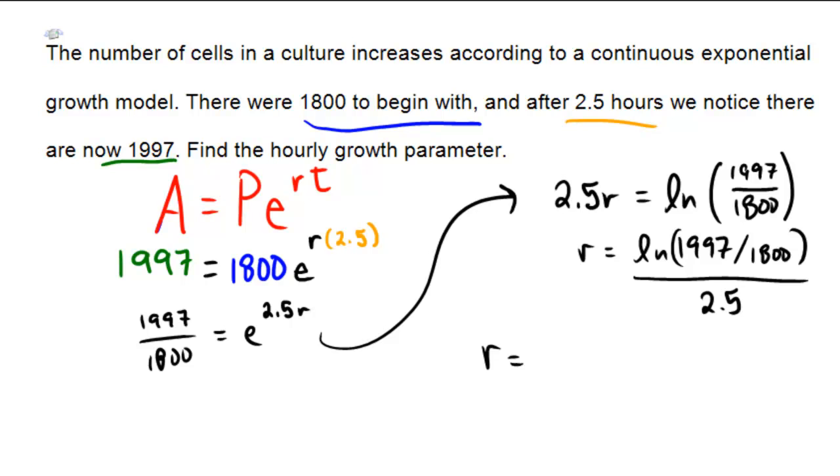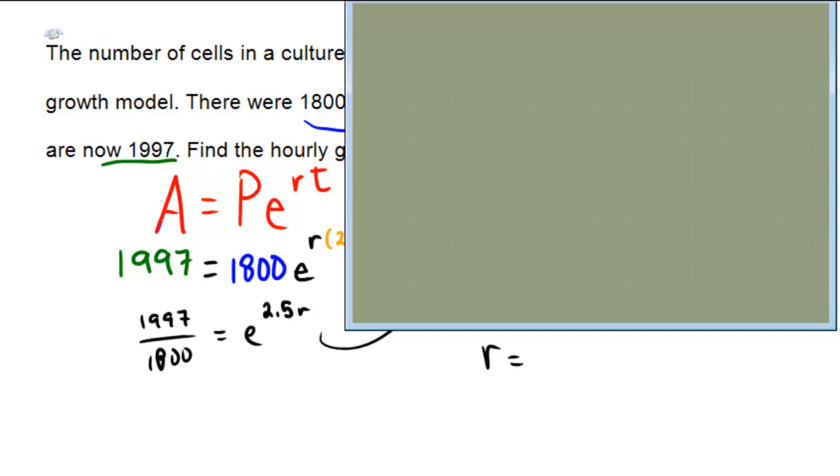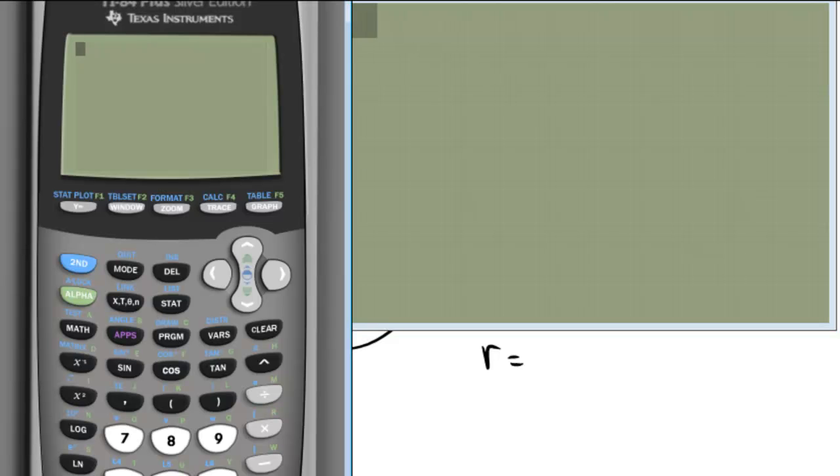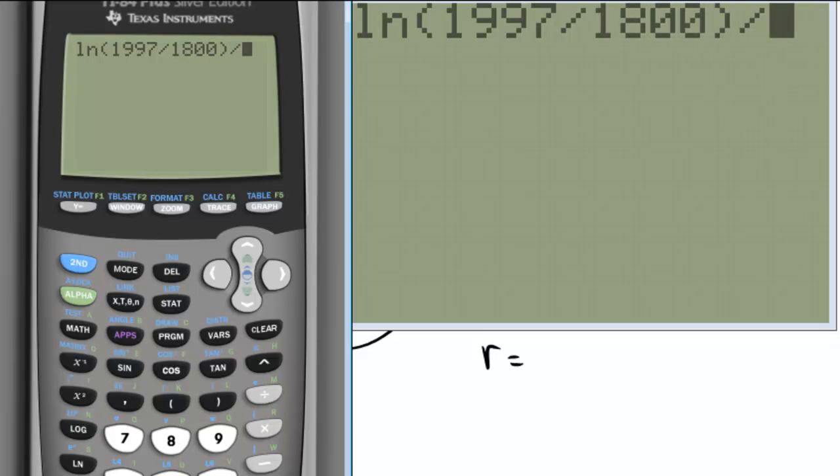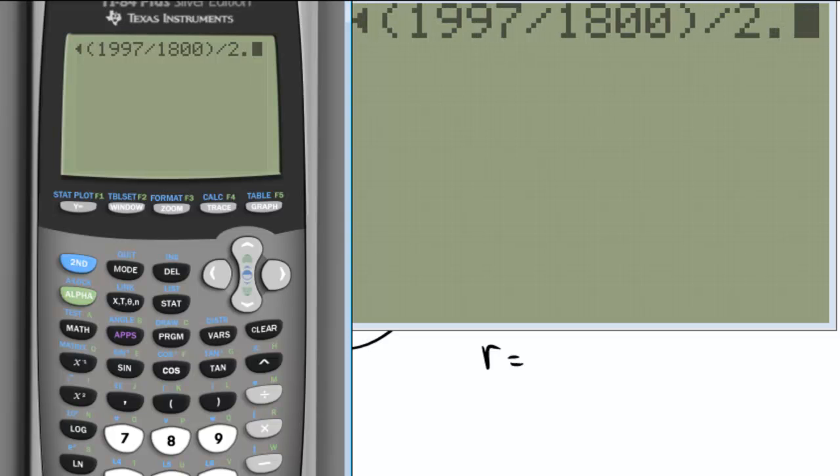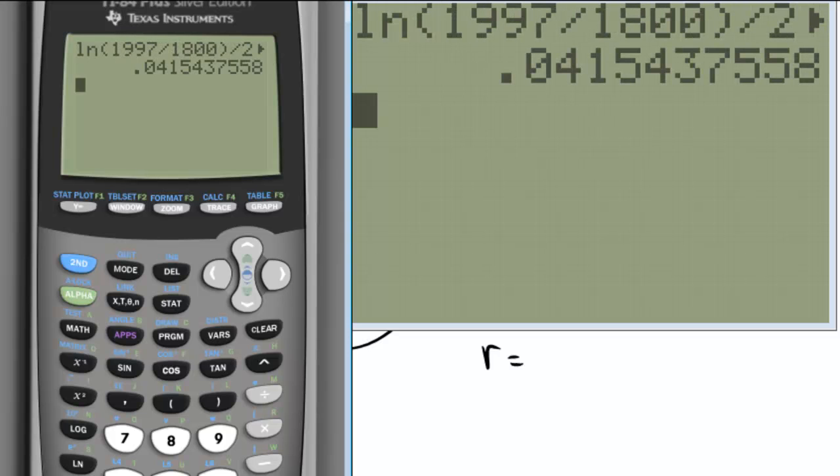I can't do that in my head, so let's bring out our calculator. We have ln of 1997 divided by 1800, divided by 2.5, and the calculator yields 0.0415.